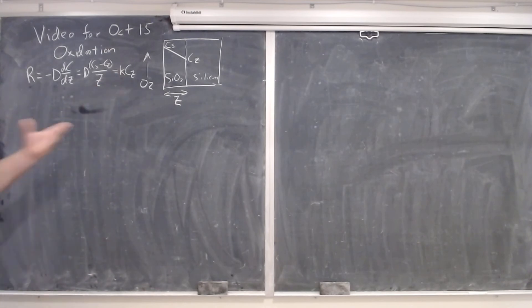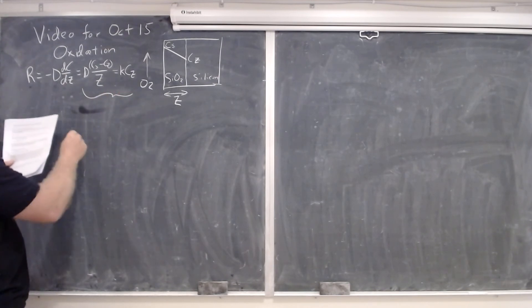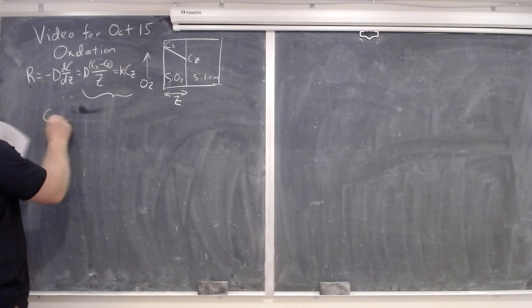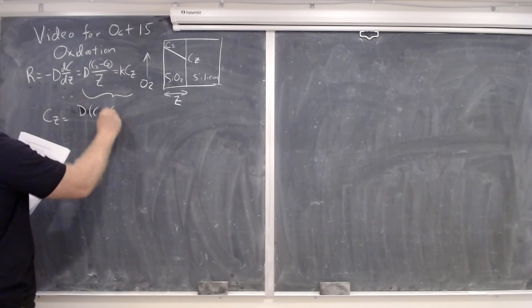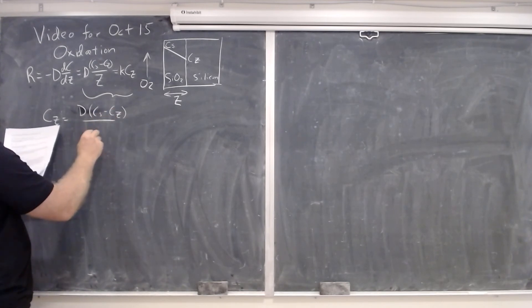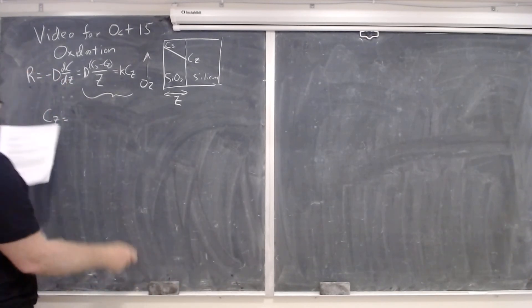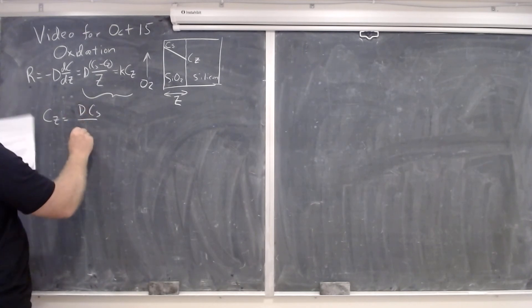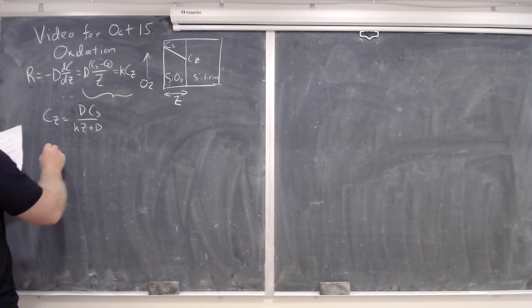Because it's equal to those two things, we use that to derive that C sub Z is equal to, just solving that equation, D times Cs over Kz plus D.